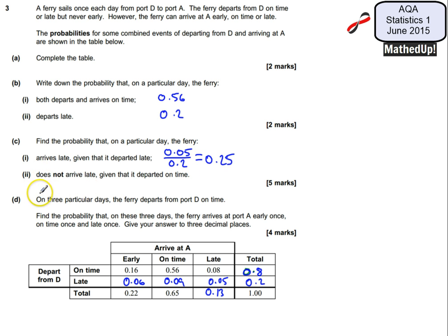And part two says it does not arrive late given that it departed on time. So we're given that it departed on time so that's going to be out of 0.8 and it does not arrive late. Well, the probability of it arriving late is going to be 0.08 so the probability of it not arriving late then that's going to be the sum of these two which is going to be 0.72.